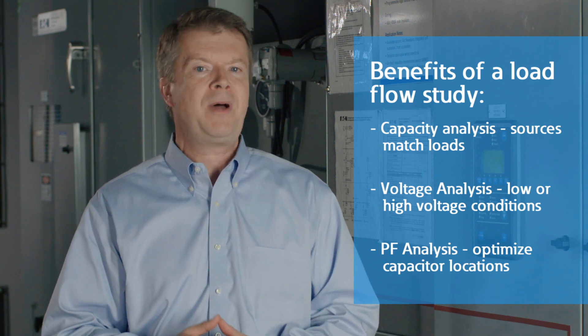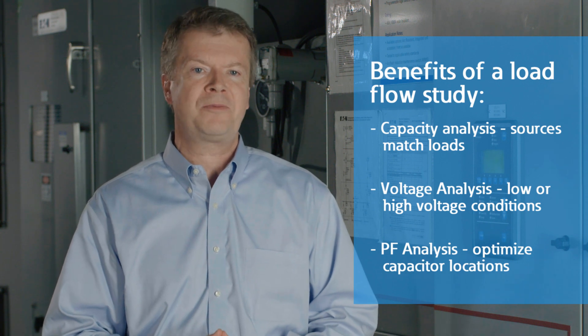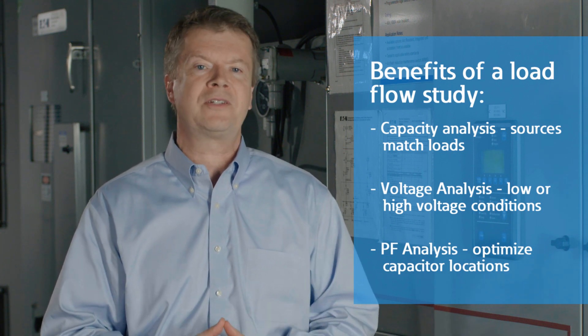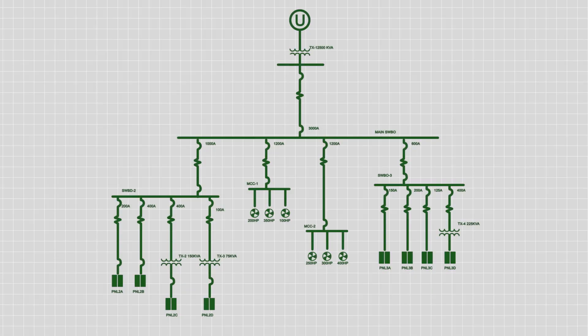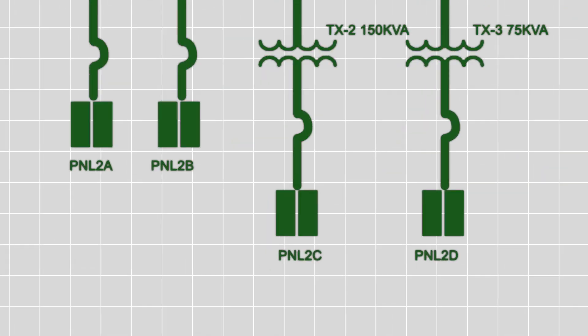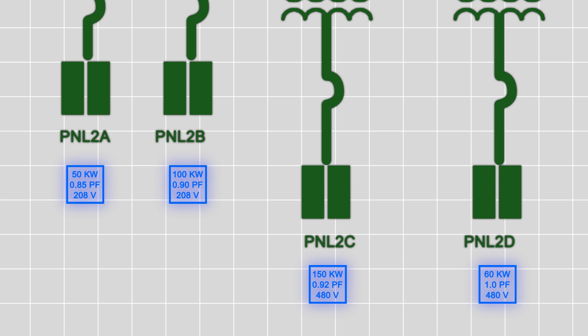Finally, a power factor study may indicate where capacitor banks are required to stay within the limits of your utility contract. The first step in a load flow study is to create an accurate system model and single line diagram. From there, today's computer programs can run simulations of that power system to evaluate what-if scenarios for load changes in contingent situations.